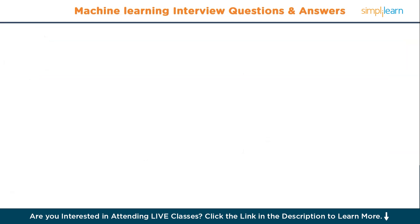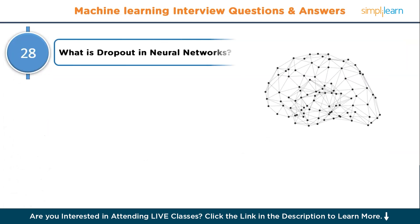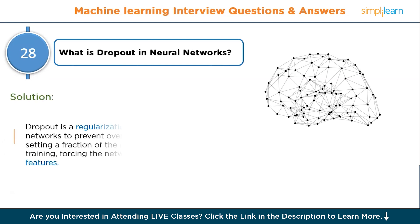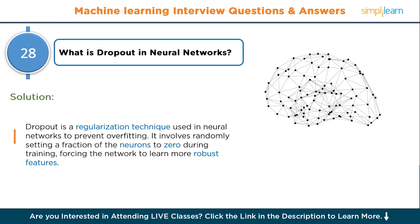Question number twenty-eight: what is dropout in neural networks? Dropout is a regularization technique used in neural networks to prevent overfitting. It involves randomly setting a fraction of the neurons to zero during training, forcing the network to learn more robust features.